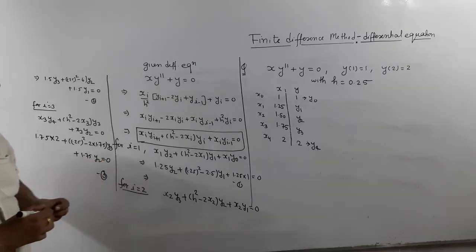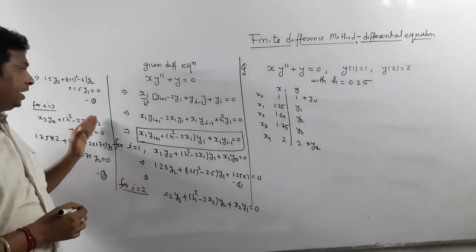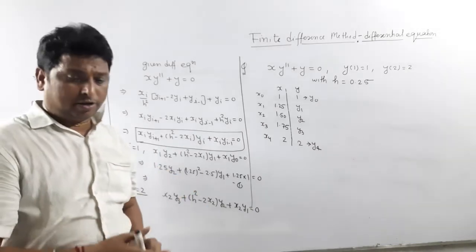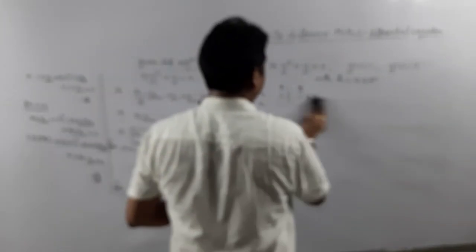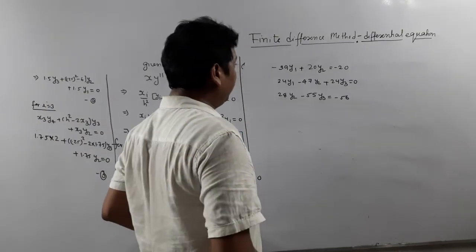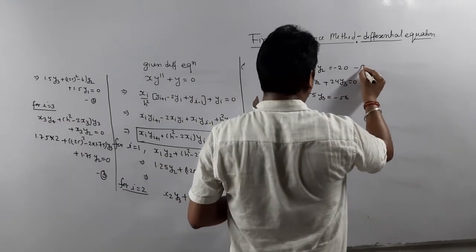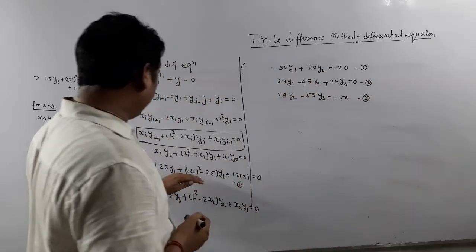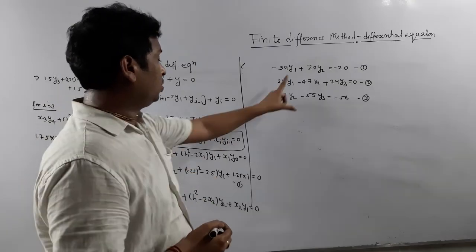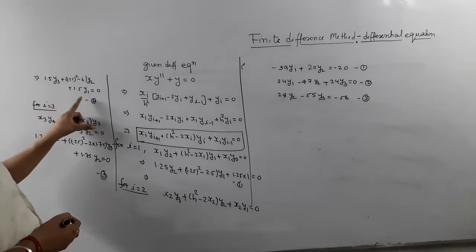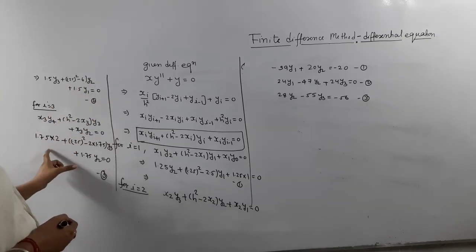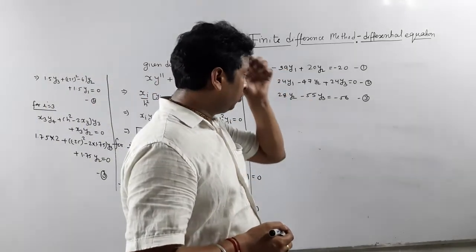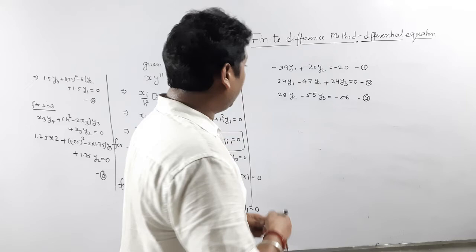When you simplify all three cases (i = 1, 2, 3) you get three equations in unknowns y₁, y₂, and y₃. Equation 1 involves y₁ and y₂; equation 2 involves y₁, y₂, and y₃; equation 3 involves y₂ and y₃. You now have three equations with three unknowns. The unknowns are y₁, y₂, and y₃.